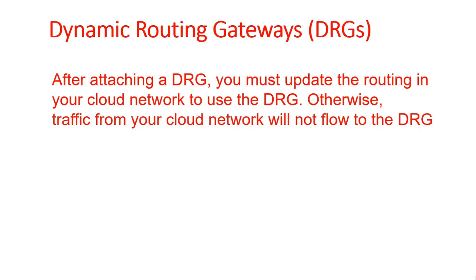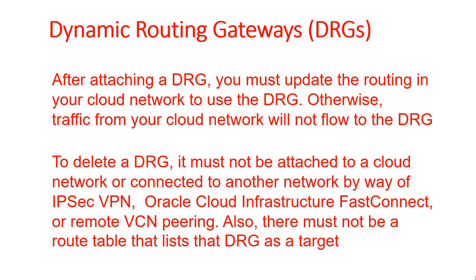Otherwise the traffic is not going to flow through that network. To delete a DRG, it must not be attached to a cloud network or connected to another network by way of IPsec VPN, Oracle Cloud Infrastructure FastConnect, or remote VCN peering. Also, if it is listed as the target in a route table, you won't be able to delete it. So if there is a link of any of those kinds, you won't be able to delete that DRG.